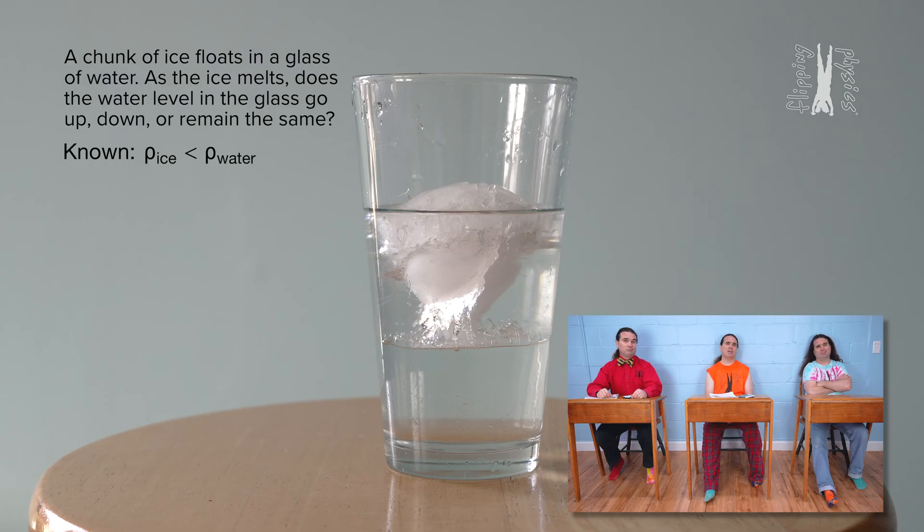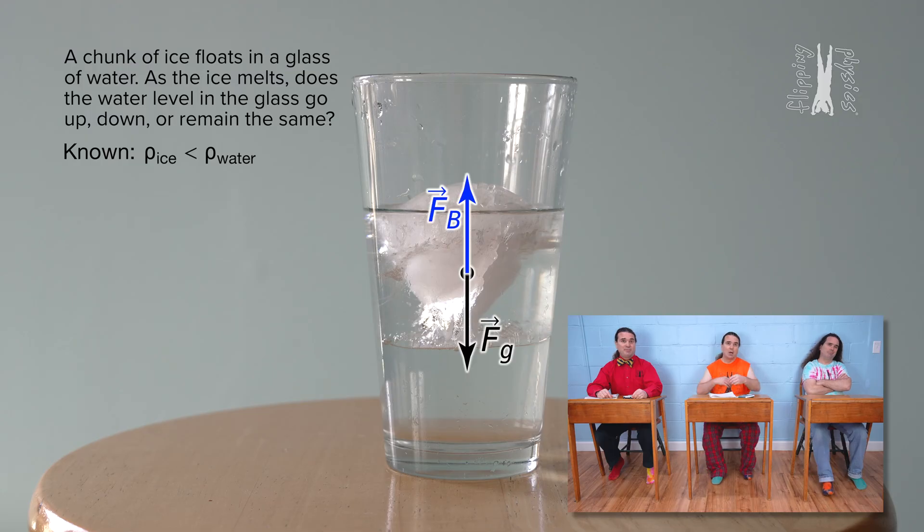I think we start with the free body diagram of the forces acting on the chunk of ice and go from there. Yeah. Okay, the buoyant force is up and the force of gravity is down.